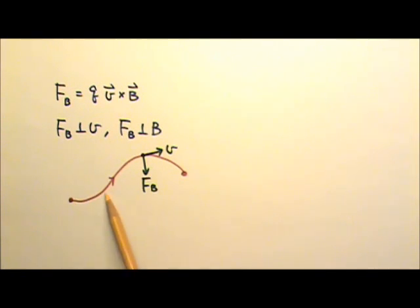Let's say this is the path the charge follows. V is always tangent to the path, and if the magnetic force is always perpendicular to the velocity, that means the magnetic force is always in the radial direction. So the magnetic force can never do any work.